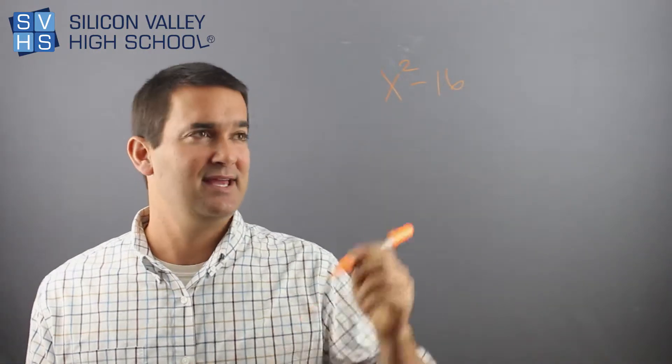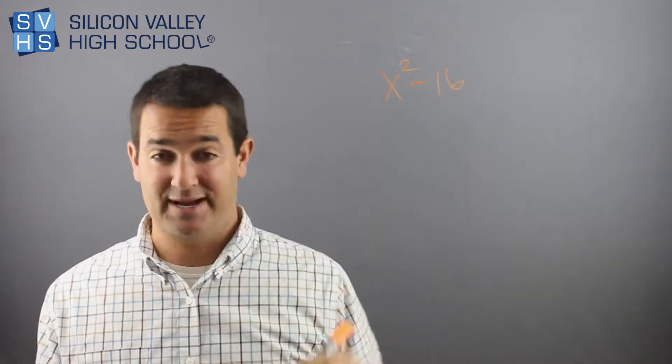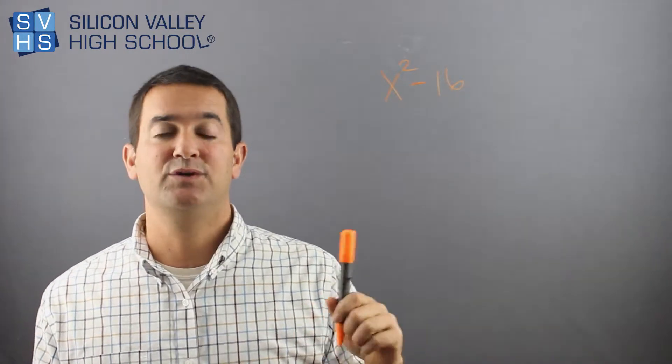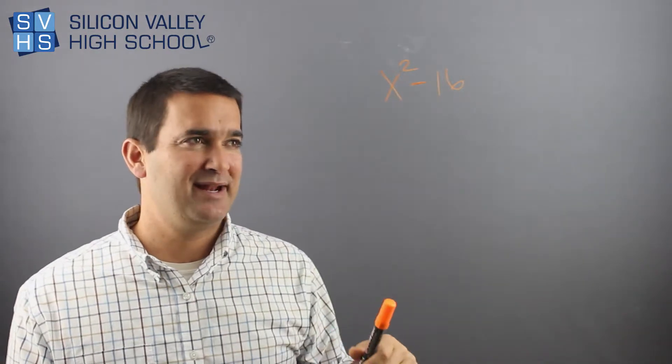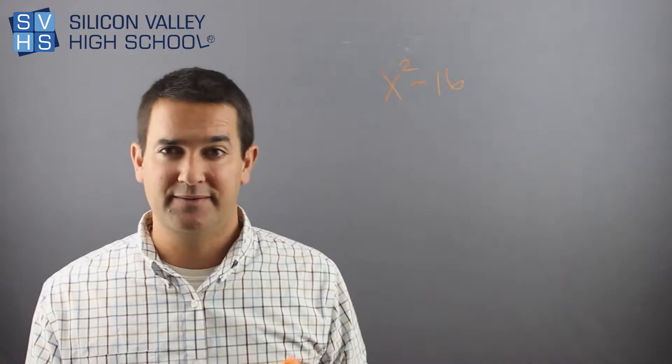Basically this is a difference of squares. And the key is difference, a minus sign, and squares, two things that are squared. That's x squared. I can see that pretty easily. 16, I think it's something squared. That's four squared, right?